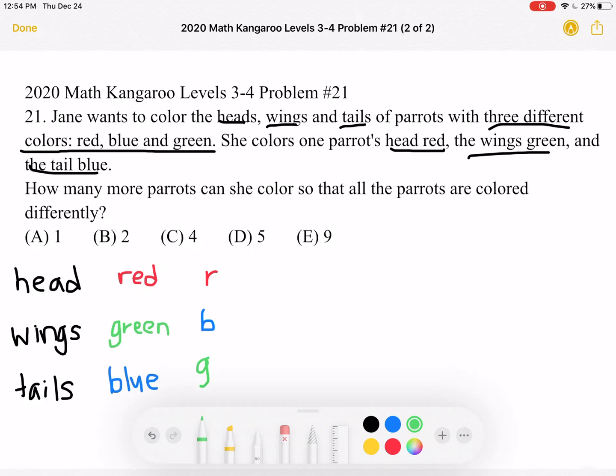And as we can see, there's no other parrot we can create with a red head that's not already listed because we want each of the head, wing, and tail to be three different colors. So that's it with the red head.